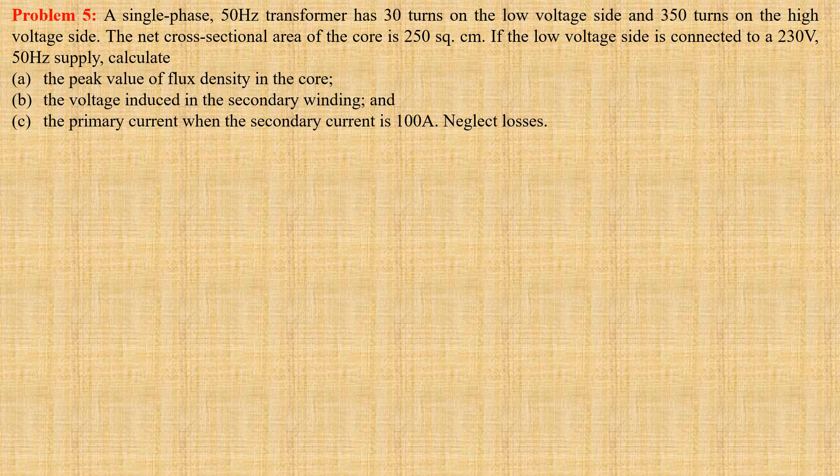Problem number 5. A single phase 50 Hz transformer has 30 turns on the low voltage side and 350 turns on the high voltage side. The net cross-sectional area of the core is 250 square cm. If the low voltage side is connected to a 230 volt 50 Hz supply, we have to calculate the peak value of flux density in the core, the voltage induced in the secondary winding, and the primary current when the secondary current is 100 ampere. Losses are to be neglected.